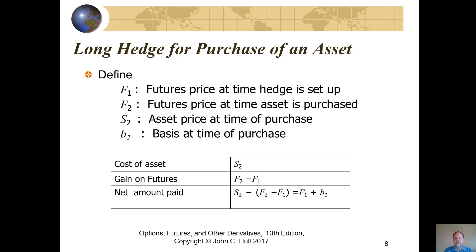Since that isn't always the case, in reality we will pay F1 plus the basis, where the basis is the difference between S2, the actual purchase price of the asset, and F2, the price of the future on the day of expiration.